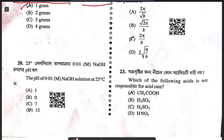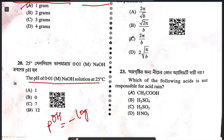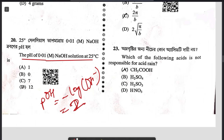Question 20: the pH of 0.01 molar NaOH. First calculate pOH = -log[OH⁻], which gives 2. Using pH + pOH = 14, the pH becomes 12.